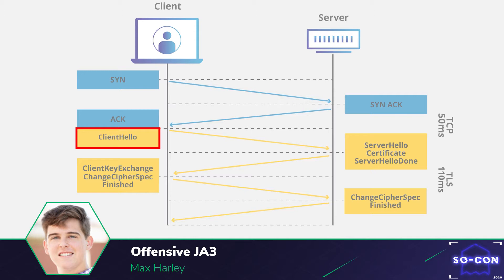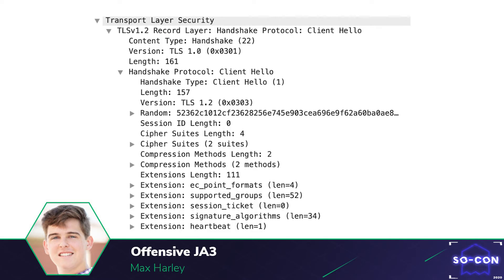As a result, before TLS communication begins, the client and server need to negotiate the encryption mechanism they're going to use. The client begins this process by sending a client hello packet. I opened up Wireshark and captured a TLS handshake — this is the client hello packet, which is attempting to negotiate the encryption mechanism both client and server will use.